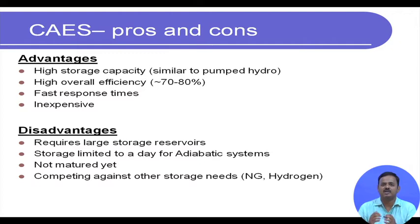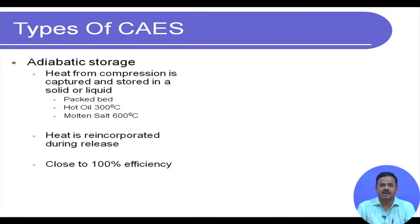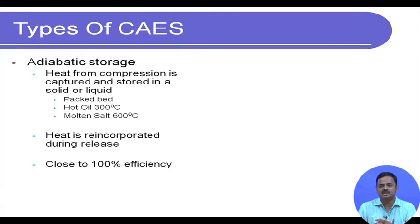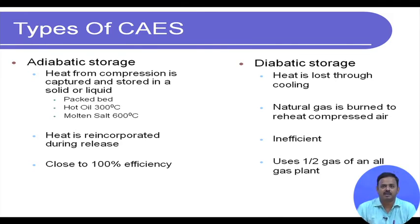There are different types of CAES. Adiabatic storage: heat from compression is captured and stored in a solid or liquid medium — packed beds, hot oil, and molten salt are examples — and re-incorporated into the compressed air during release. Efficiency is close to 100% if the off-peak storage and peak release happen within a day; otherwise the regenerative heat exchanger and reservoir will lose the captured heat.